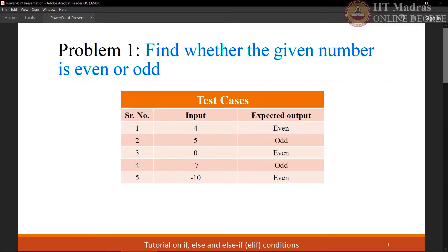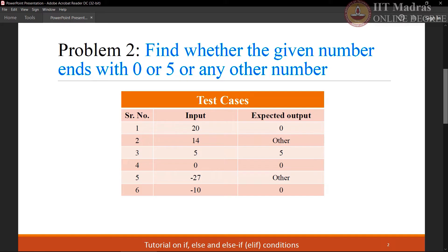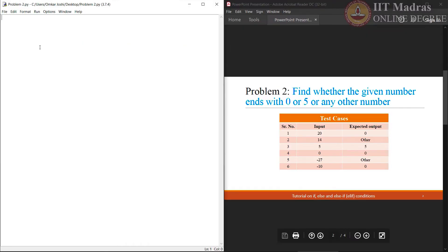Now let us move on to the next problem statement: find whether the given number ends with 0 or 5 or any other number. This is a little bit more tricky than the previous question. Here we have to check what is the last digit in the given number — whether it is 0, 5, or any other number. Here also, we can use the modulo operator to get the remainder. If we divide the given number by 10, then it will give us the remainder.